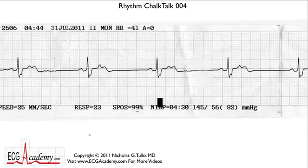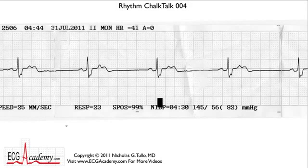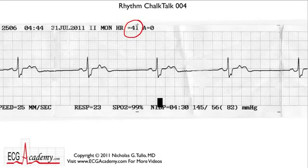This one is an intermediate one, certainly not as bad as the last one. Let's give you a little clinical background. Imagine this patient is being monitored for some post-operative problems, and the nurse calls that the patient has all of a sudden developed a heart rate of about 40 beats per minute. You have to look at the EKG and figure out what's going on.